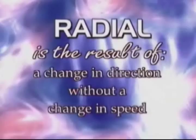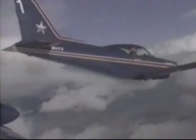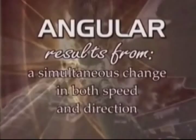Radial or centrifugal acceleration is the result of a change in direction without a change in speed. An example is when a pilot performs a sharp turn, pulls out of a dive, or pushes over into a dive. Radial acceleration becomes most relevant to pilots because of the adverse effects it has on the human body. Angular acceleration results from a simultaneous change in both speed and direction, and takes place during a tight spin.